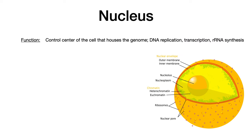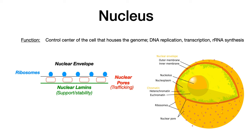Now let's talk about the nucleus. The nucleus is really the control center of the cell — it's where DNA replication occurs, transcription, and rRNA synthesis. In the nucleus, we have the nuclear envelope, which is that outer membrane on which ribosomes sit. We also have nuclear pores, shown in red, which are small areas of trafficking allowing the nucleus to communicate with the rest of the cell. On the interior surface, we have nuclear lamins for support and stability. Nuclear pores allow both large molecules via active transport and small molecules via passive diffusion.